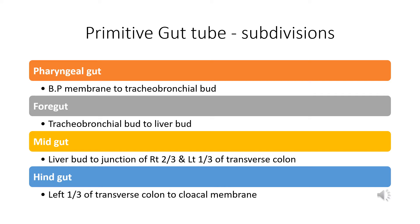The pharyngeal gut extends from the buccopharyngeal membrane — the primordium of the future mouth — to the tracheobronchial bud, which is the respiratory diverticulum giving rise to the trachea and lungs. The foregut extends from the respiratory diverticulum to the liver outgrowth or liver bud. The midgut extends from the liver bud to the junction of the right two-thirds and left one-third of the transverse colon, and the hindgut extends from the left one-third of the transverse colon to the cloacal membrane.